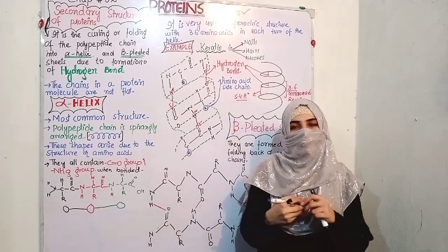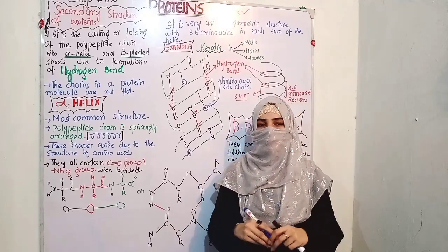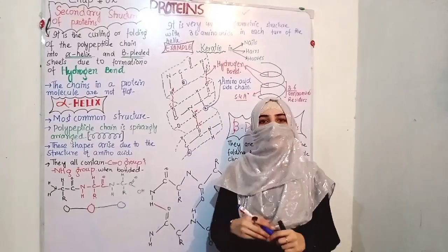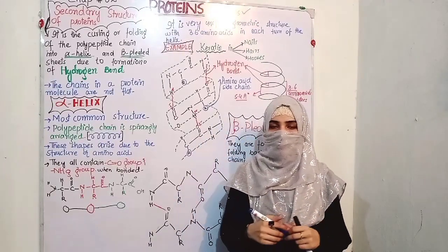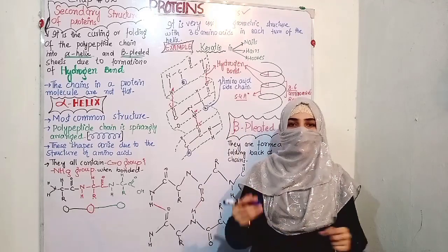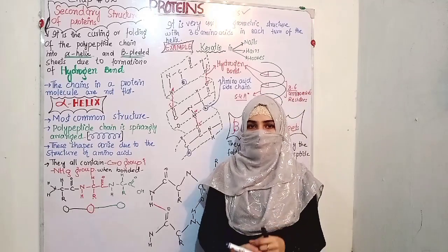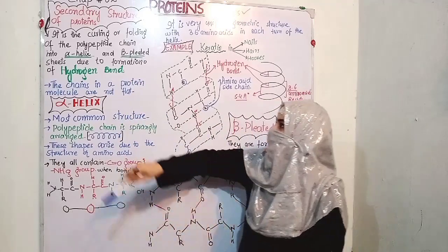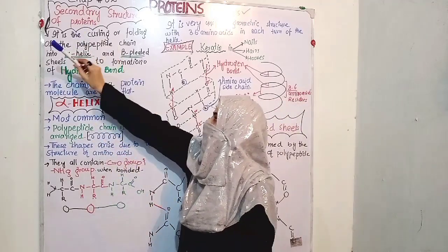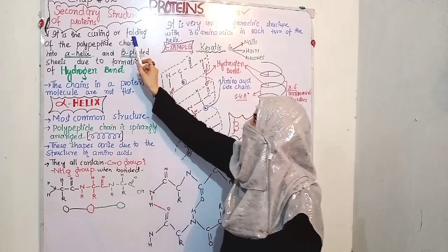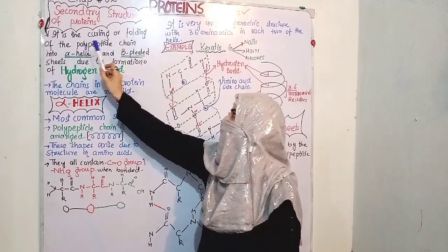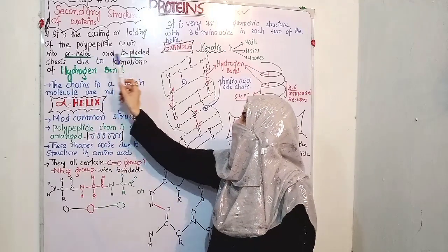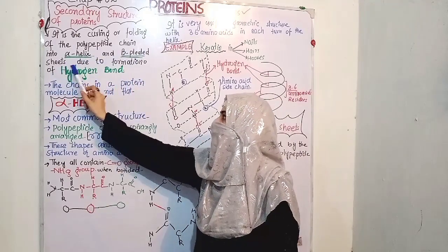Now, if there is any protein that is a straight chain, there is complexity — which is curling and folding. This is what we will discuss in secondary structure. Secondary structure is the curling or folding of the polypeptide chain into alpha helix and beta-pleated sheets due to the formation of hydrogen bonds.